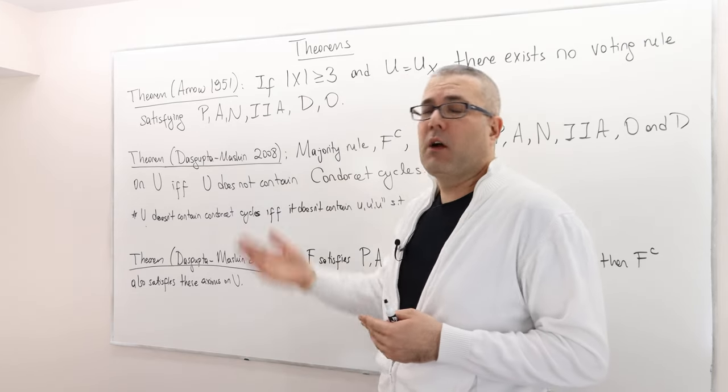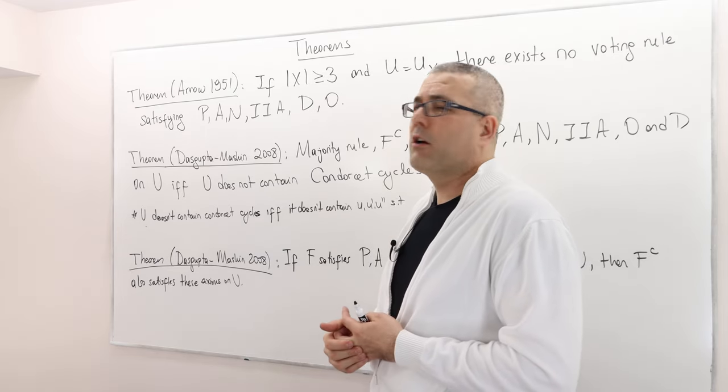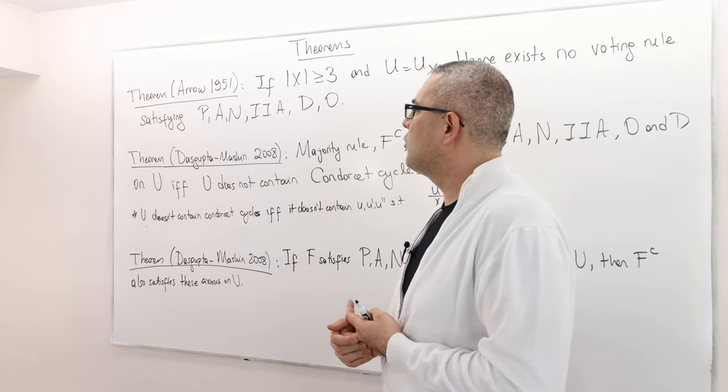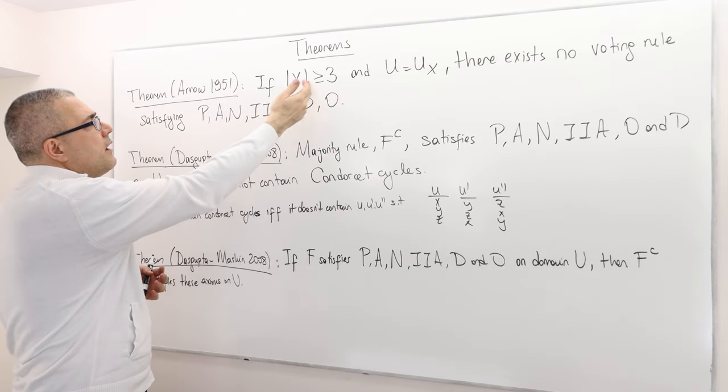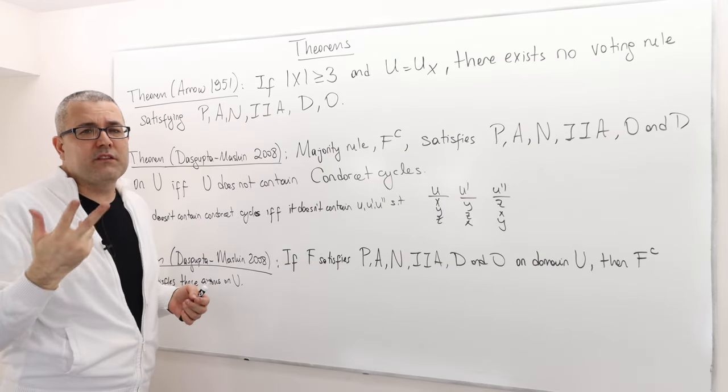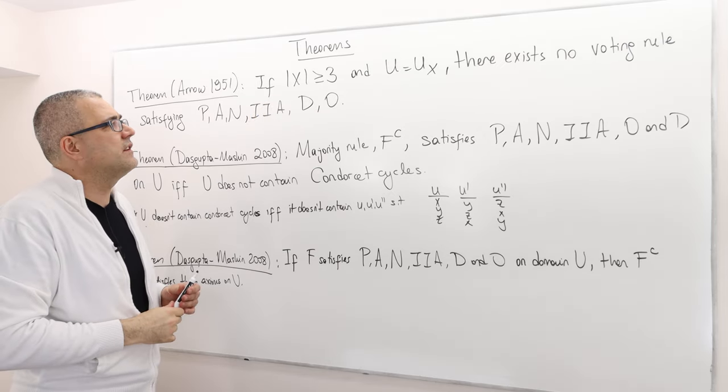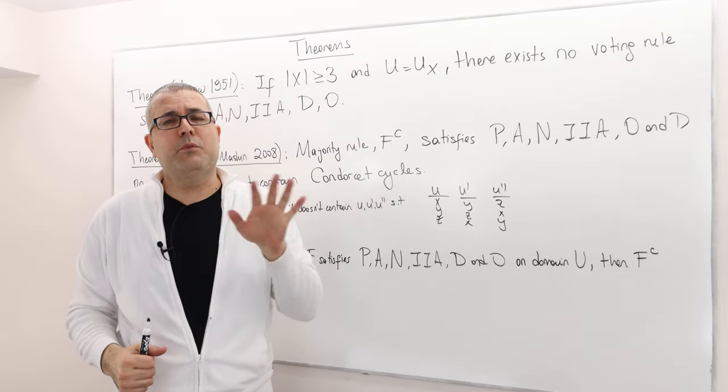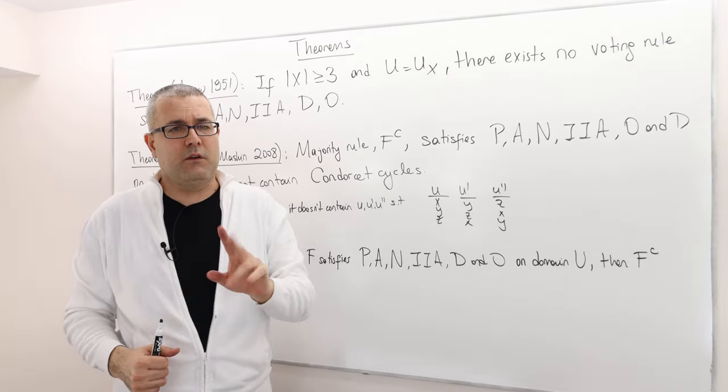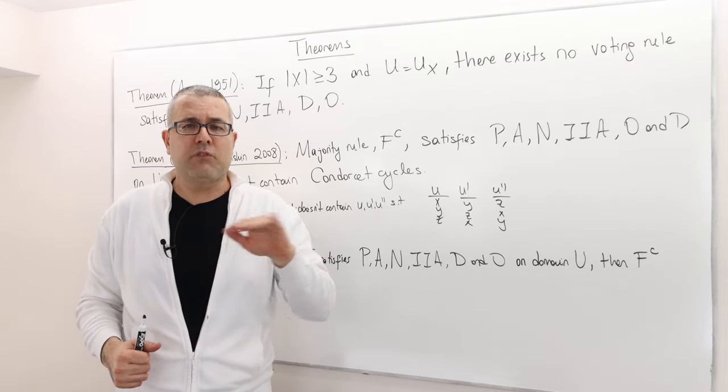We're going to start with the very famous impossibility theorem by Arrow in his 1951 paper. This is his theorem: if there are at least three candidates, so the number of candidates in set X is greater than or equal to 3, and if we look at all the possible preference profiles, preferences over alternatives are unrestricted.